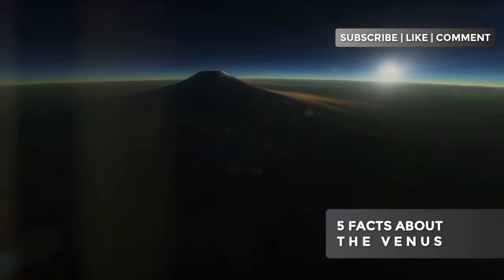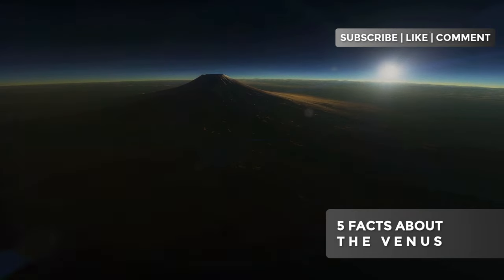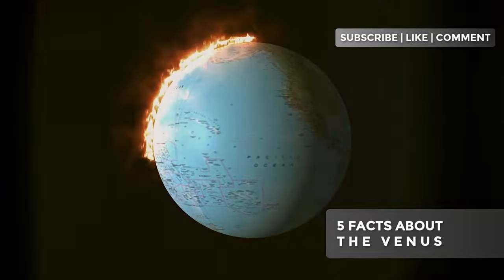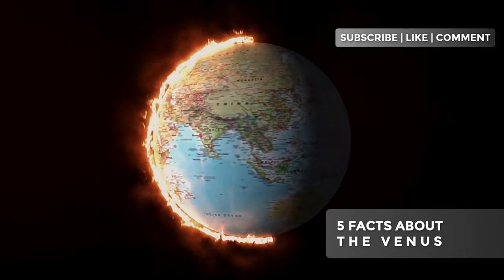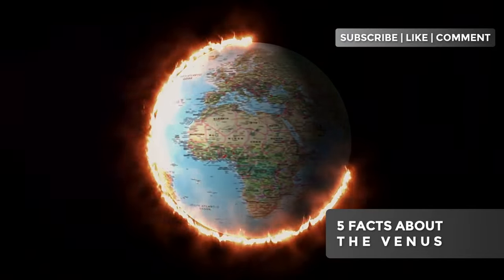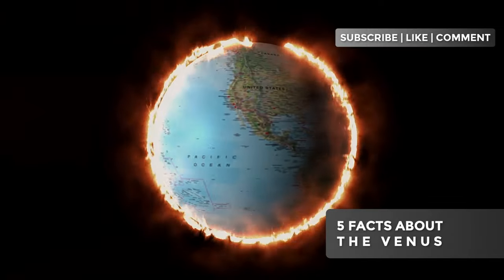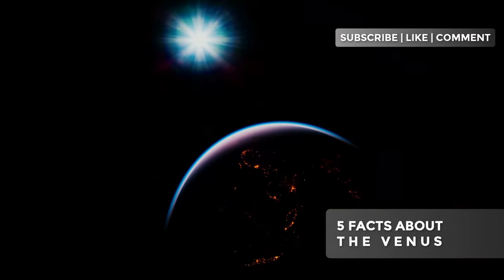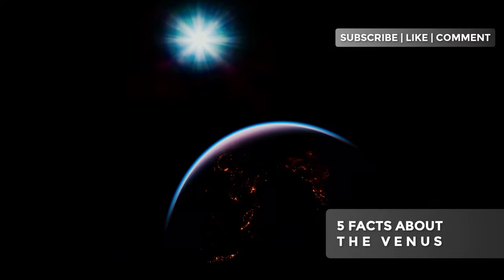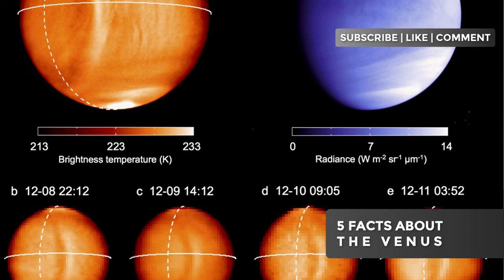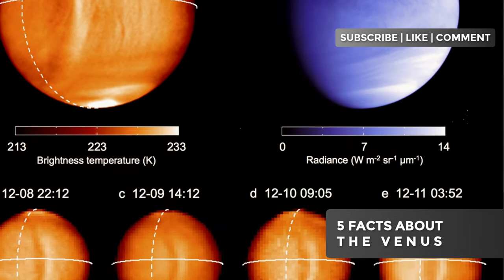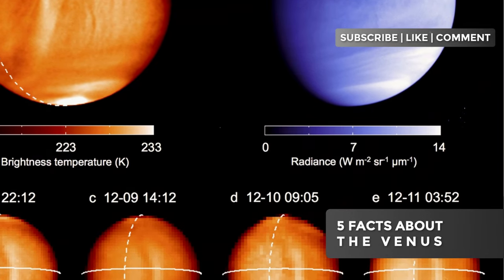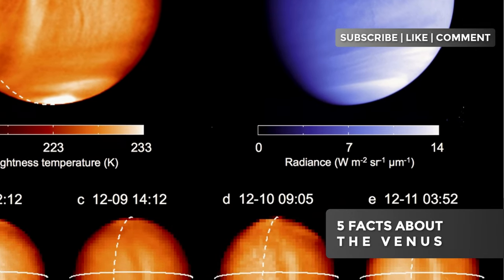Understanding how Venus reached its current state can help us predict and potentially mitigate long-term changes on our own planet. Venus also serves as a natural laboratory for the study of large-scale geoengineering technologies. Some scientists propose that studying how we could, hypothetically, terraform Venus, making it more habitable, could provide valuable insights into how to manage and protect Earth's climate in the face of anthropogenic climate change. Finally, Venus's story reminds us of the delicate interconnection between a planet and its host star. Venus's evolution was profoundly influenced by changes in the Sun, highlighting the importance of considering planetary systems as dynamic and interconnected entities, not just isolated bodies in space.